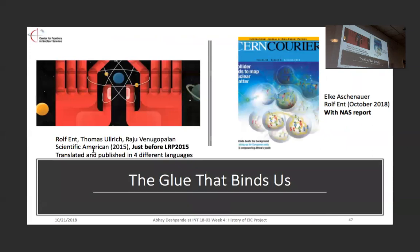Talking to people outside of our field is really important. This was started around the long-range plan — Ralph Venugopalan, Thomas Ullrich, and Raju wrote an article in Scientific American in 2015, just around the time of the long-range plan. It was very useful to have such a broadly circulated article. That article was published and translated in at least four different languages. More recently, Elka and Ralph have written an article on nuclei, and even the front page now looks like the gluons we are looking for. These are important things that we should continue to do in the near future.